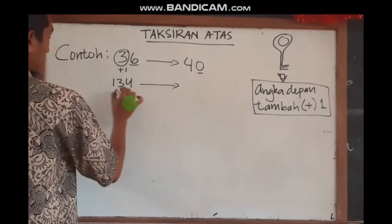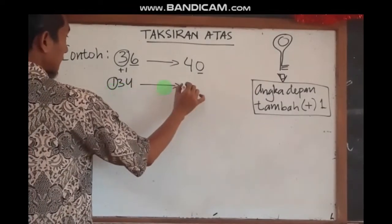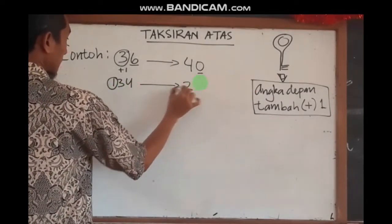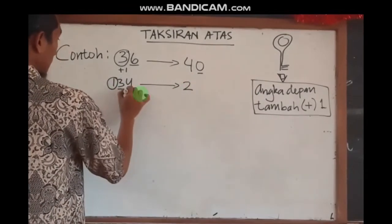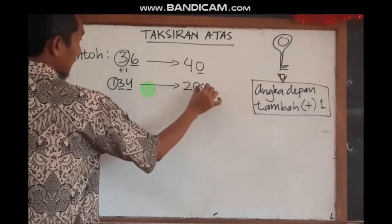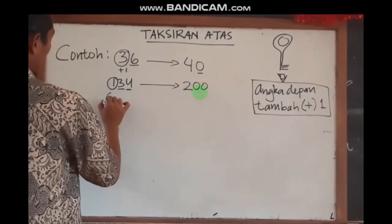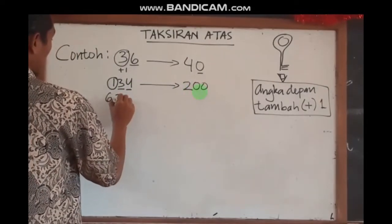Yang kedua: 134 — maka satuannya tambahkan 1 menjadi 2, dan 2 angka di belakangnya diubah ke dalam 2 nol. Maka menjadi 200.